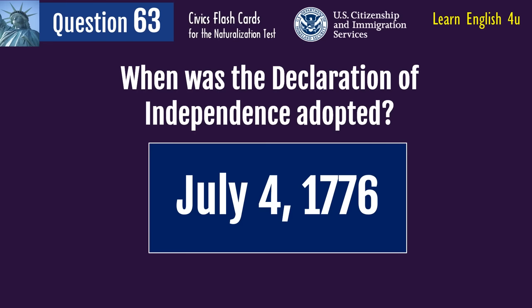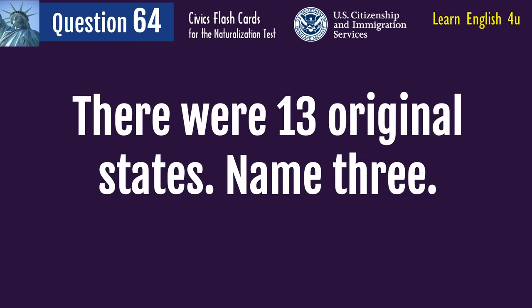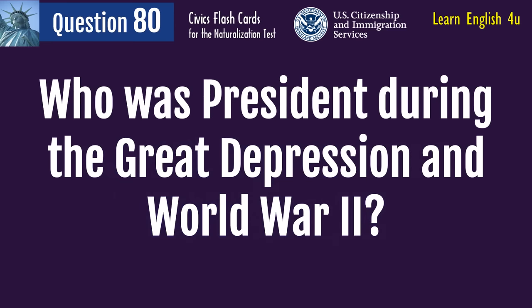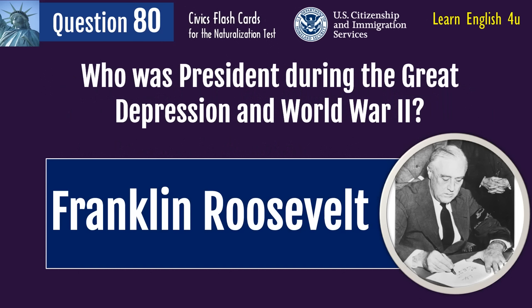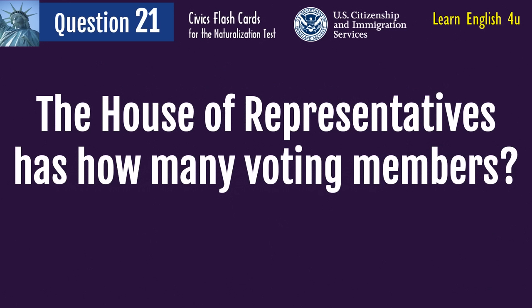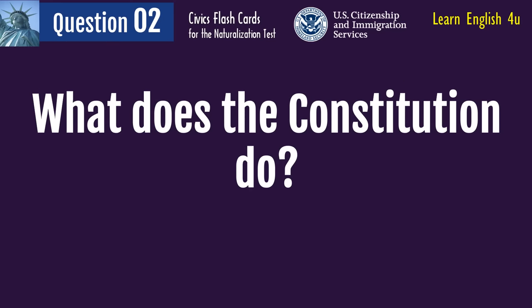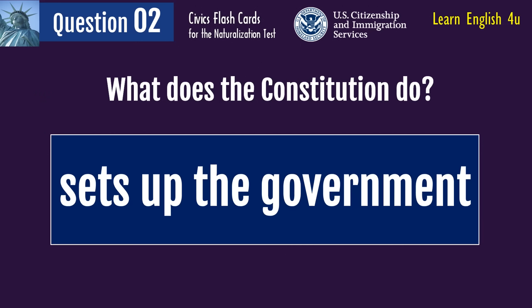July 4th, 1776. There were 13 original states. Name three. New Hampshire, New York, New Jersey. Who was president during the Great Depression and World War Two? Franklin Roosevelt. The House of Representatives has how many voting members? 435. What does the Constitution do? Sets up the government.